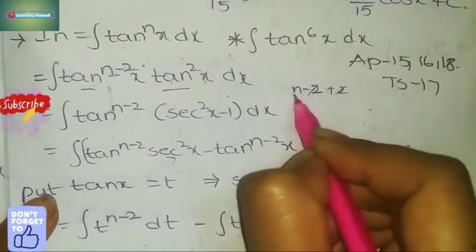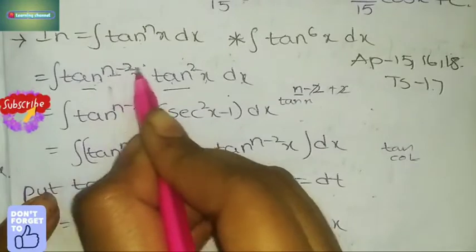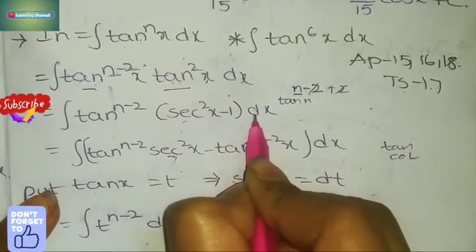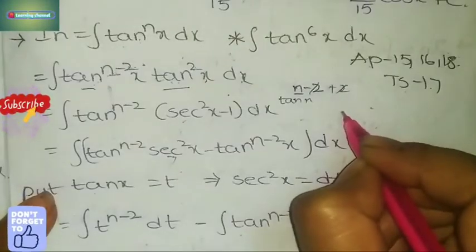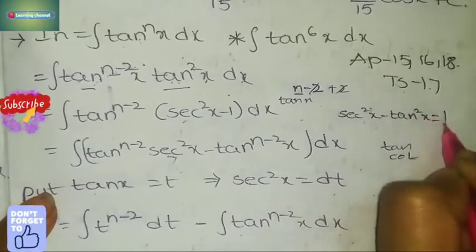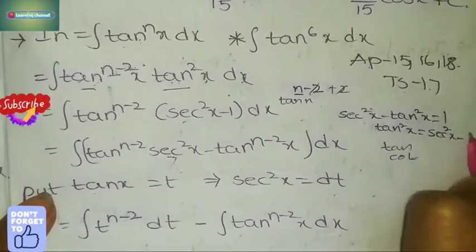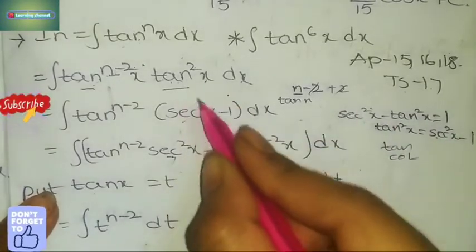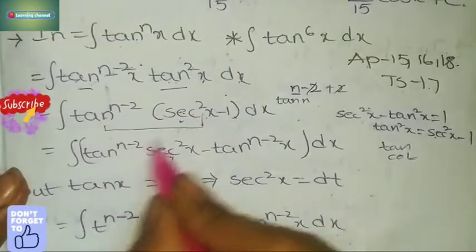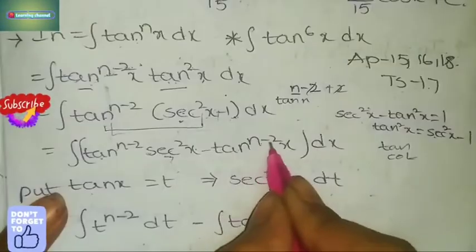We write tan^n x as tan^(n-2) · tan² x. Now substitute tan² x = sec² x - 1, using the identity sec² x - tan² x = 1, so tan² x = sec² x - 1. Substituting into the integral gives: tan^(n-2) · sec² x minus tan^(n-2) · 1, i.e., tan^(n-2) · sec² x - tan^(n-2) x, multiplied by dx.